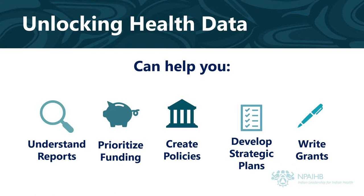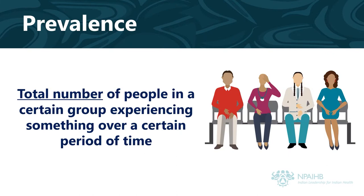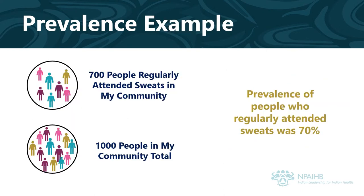So, let's use a few real-world examples you might run across at work. Prevalence and incidence are two common terms in health reports and studies. Prevalence is the total number of people in a certain group experiencing something over a certain period of time. For example, in my community, 700 people regularly attended ceremonial sweats in 2018.